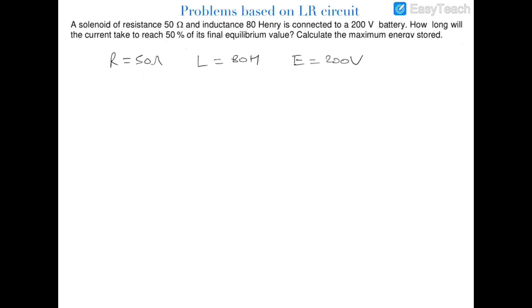In this question there is a solenoid — obviously an inductor coil — whose resistance R is 50 ohm, inductance L is 80 henry, and the EMF of the cell is 200 volts. We have to find out the time in which current will attain half of its peak value. If i₀ is its final equilibrium value, we have to find the time at which current reaches i₀/2.